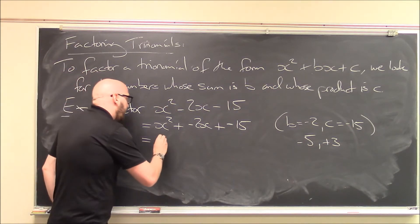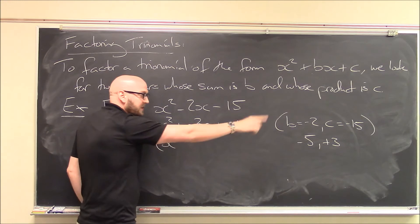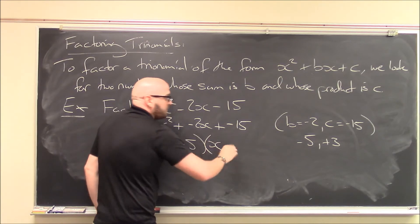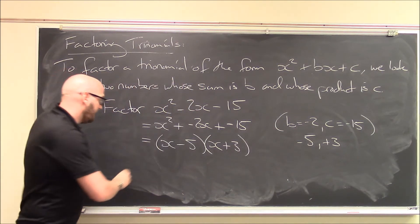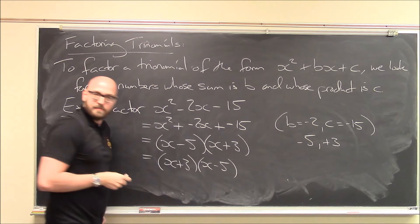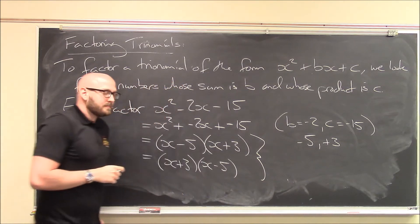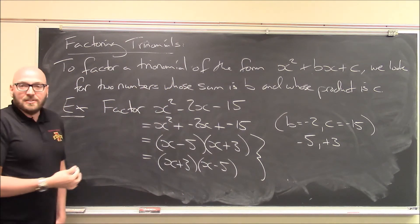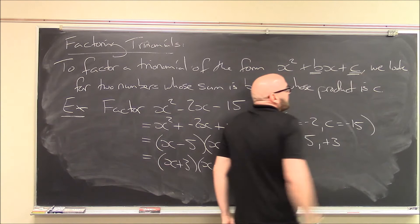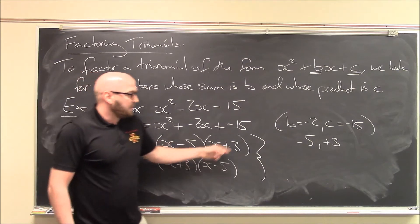So how does it factor? It factors as x plus the first number times x plus the second number — so (x minus 5)(x plus 3). The order doesn't matter, so you can also write this as (x plus 3)(x minus 5). Either one is totally correct. That's how you factor these trinomials: find two numbers that add to the middle coefficient and multiply to the constant, then write x plus each number.